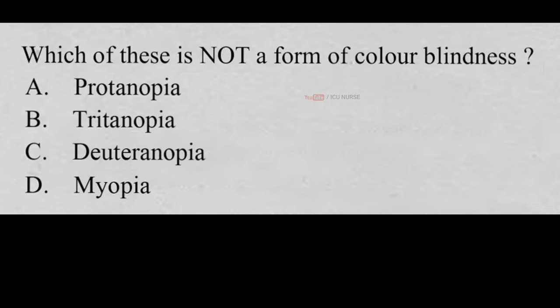Which of these is not a form of colorblindness? A. Protanopia, B. Tritanopia, C. Deuteranopia, D. Myopia. And the correct answer is D, Myopia.